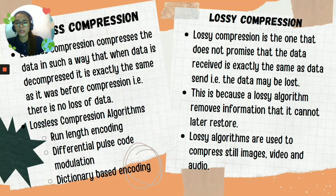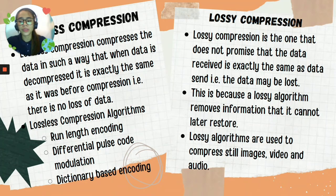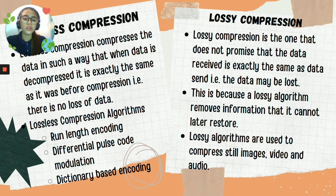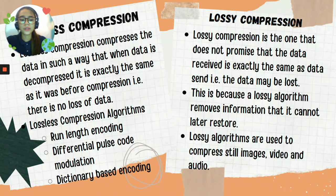First is lossless compression. It compresses data in such a way that when the data is decompressed, it is exactly the same as it was before compression — there is no loss of data. Lossless compression algorithms include run-length encoding, differential pulse code modulation, and dictionary-based encoding. Lossy compression, on the other hand, does not guarantee that the data received is exactly the same as data sent — data may be lost, because the lossy algorithm removes information that it cannot later restore.